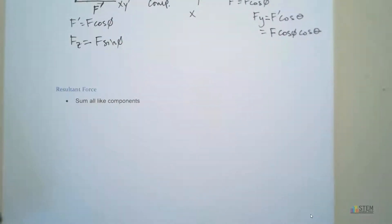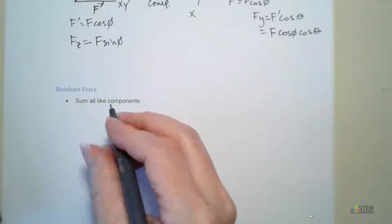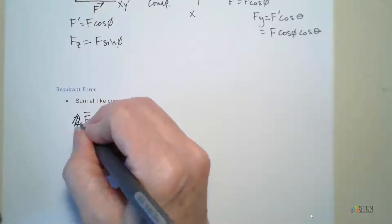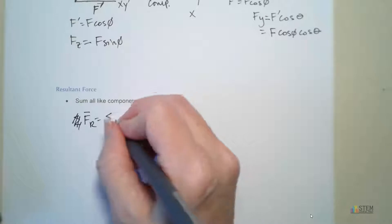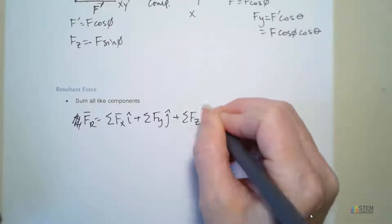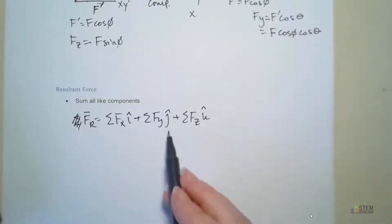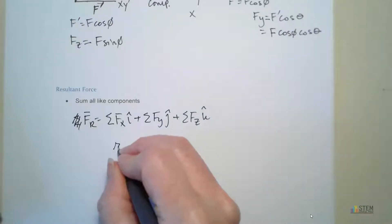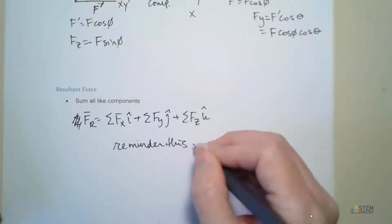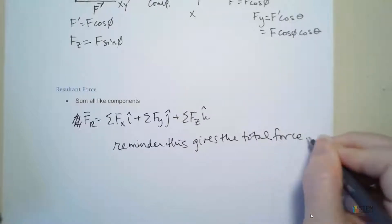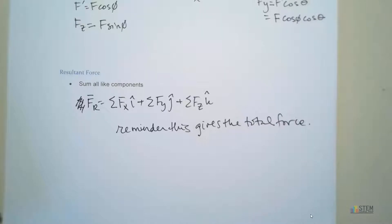One last thing for this video: the resultant force. We're going to sum all of the like components the same way we've been doing. The resultant force equals the sum of the X components i, plus the sum of the Y components j, plus the sum of the Z components k. The resultant force is just the total force acting on your system — this tells you how much of that force is in the X direction, how much is in the Y direction, and how much is in the Z direction.